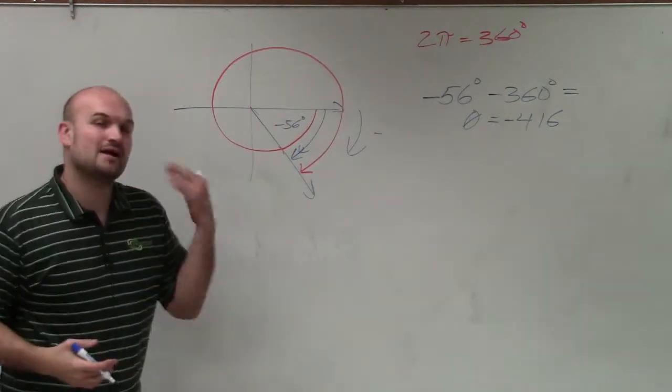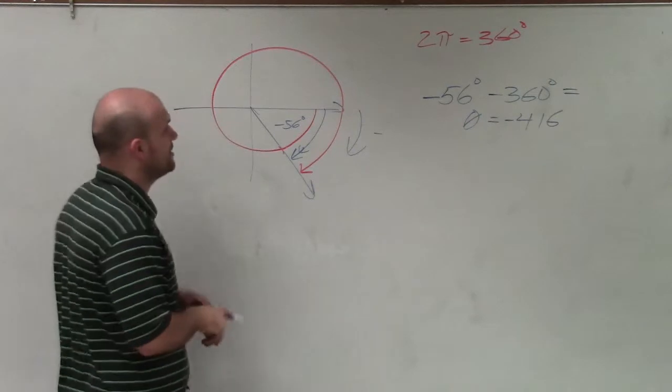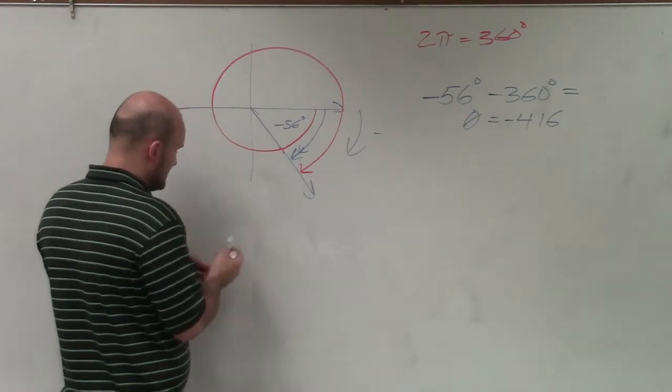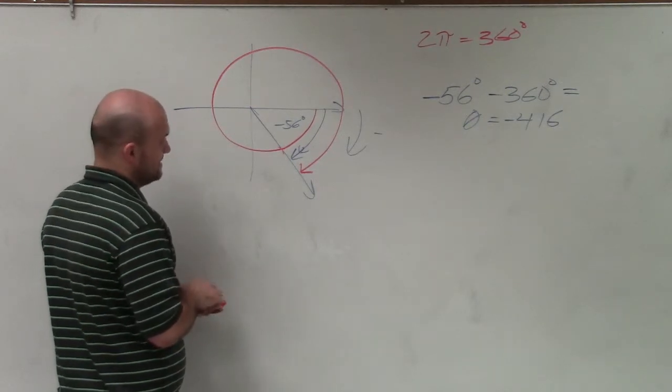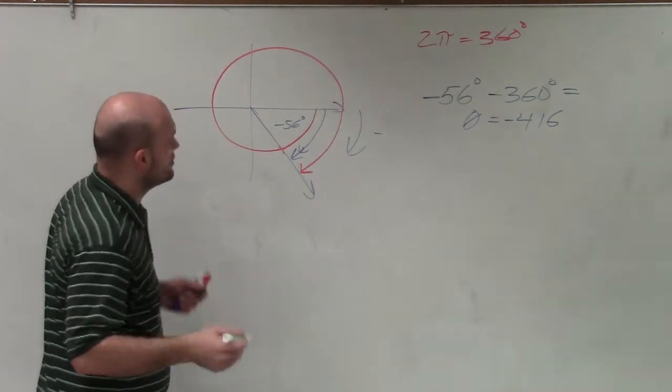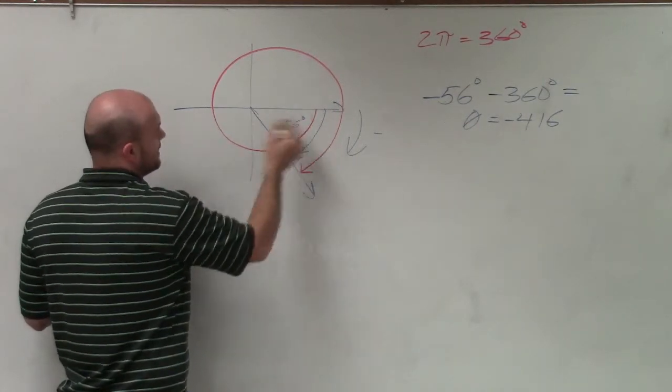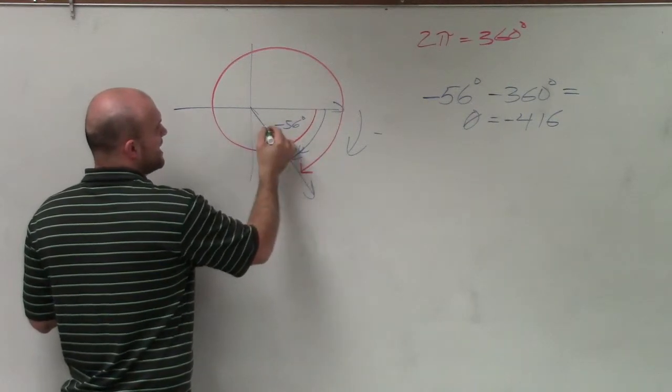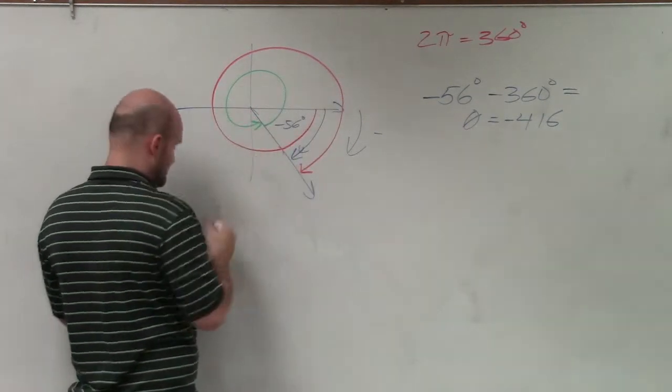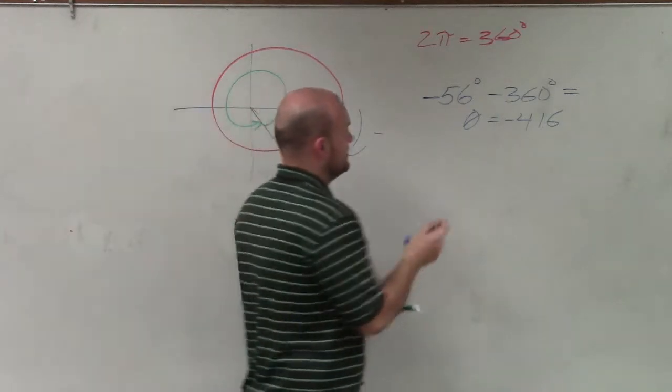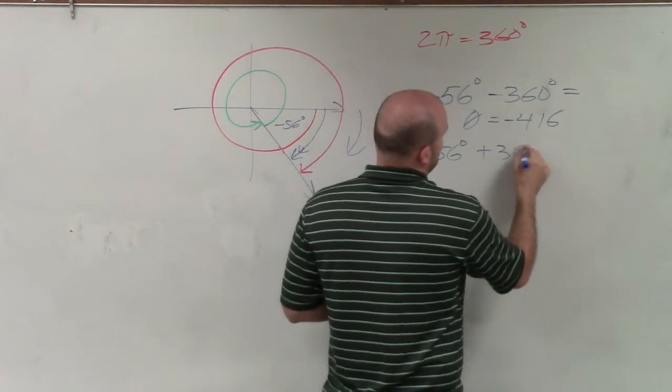Now, let's go backwards to find the smallest positive coterminal angle. So what I'm going to be doing in that case is pretty much doing the exact same thing, but now I'm going to add 360. So if you take 360 degrees, and now instead of going backwards, I'm going to add 360 going in the positive direction. So now if I take negative 56 degrees and I add 360, then θ equals positive 304 degrees.